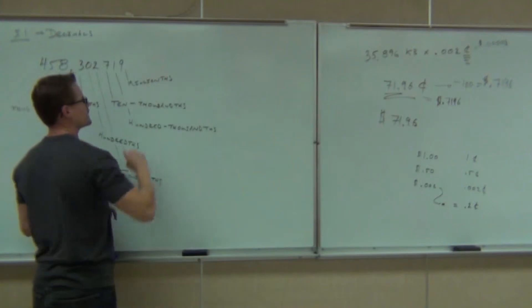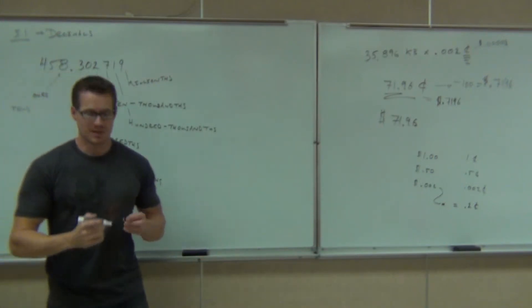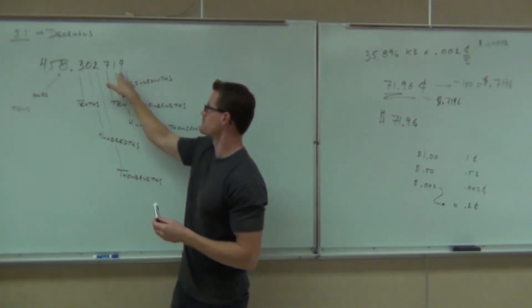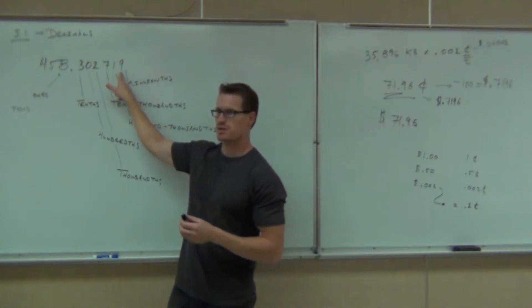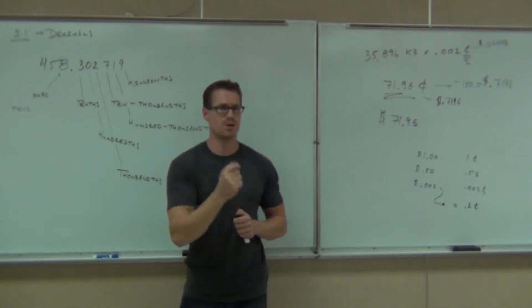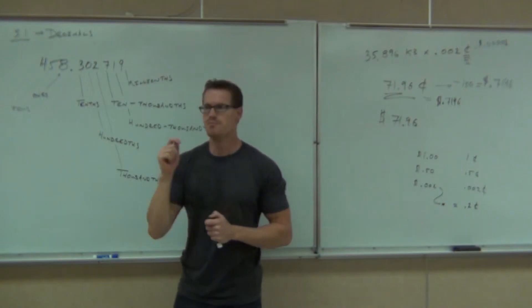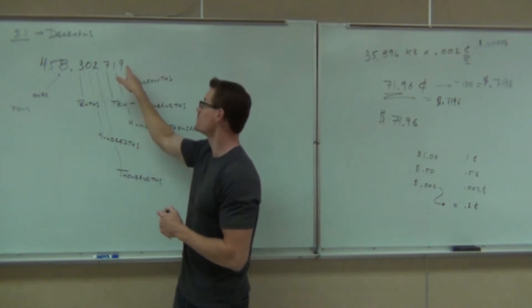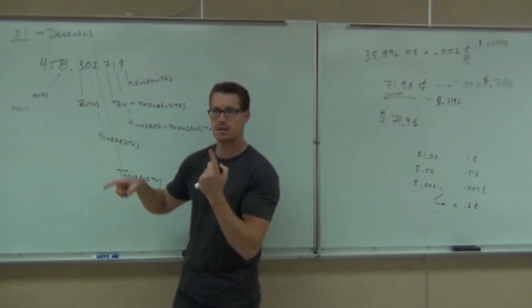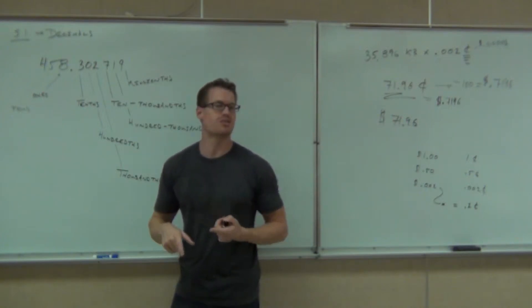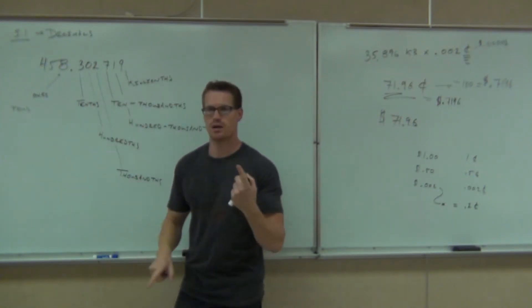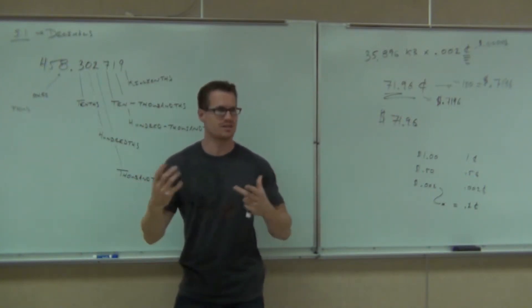And again, here's what millionths mean: it means it would take a million of these place values to equal just one — just one dollar. So if you're talking about a millionth of a penny, it would take a million of those units to equal just one penny. If you're talking about a millionth of a dollar, that's different — it would take a million of these units to equal one dollar. Do you guys see the difference there?